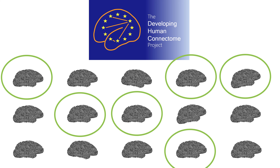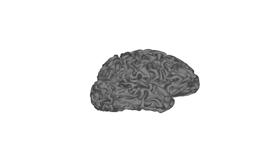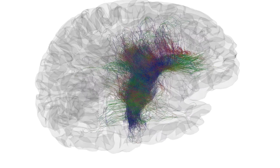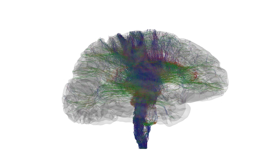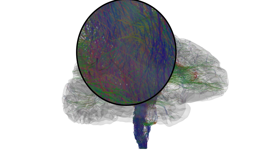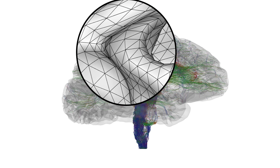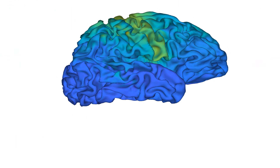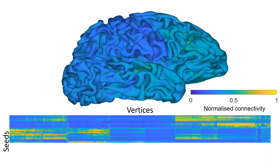From each of these neonatal scans, we measured the thalamocortical connectivity. Firstly, throughout the thalamic volume, we defined a set of 800 seeds approximately equally distributed throughout. Then, from each seed, we performed probabilistic tractography to the cortex and measured these connectivity patterns to each vertex on the cortical surface. Using a process known as connectome spatial smoothing, we smoothed these connectivity values across vertices, and by repeating this for all possible vertices, we created a dense connectivity matrix from each seed to approximately 29,000 cortical vertices.